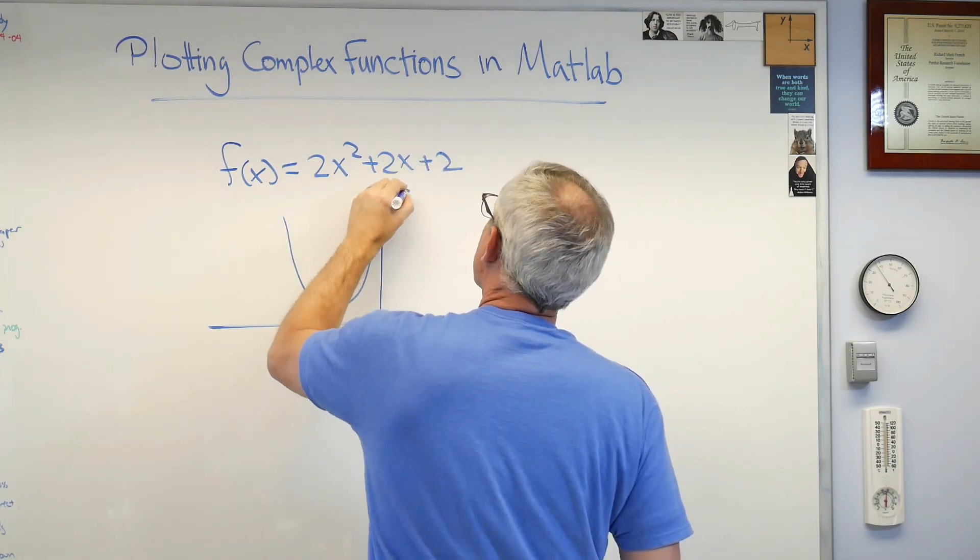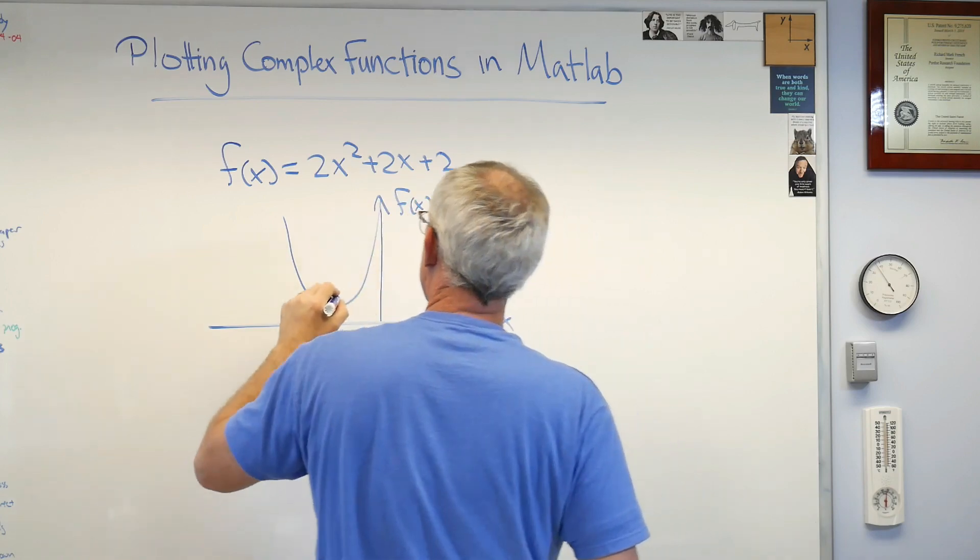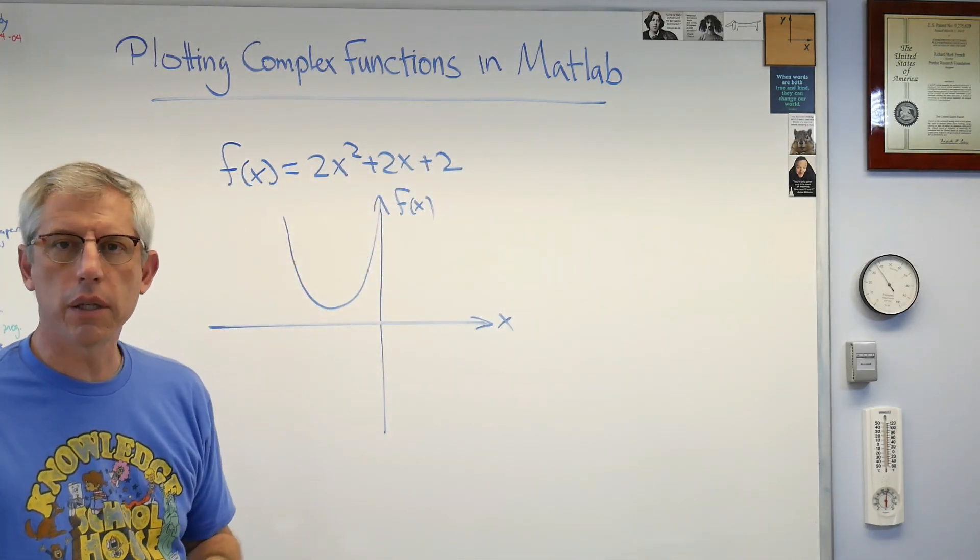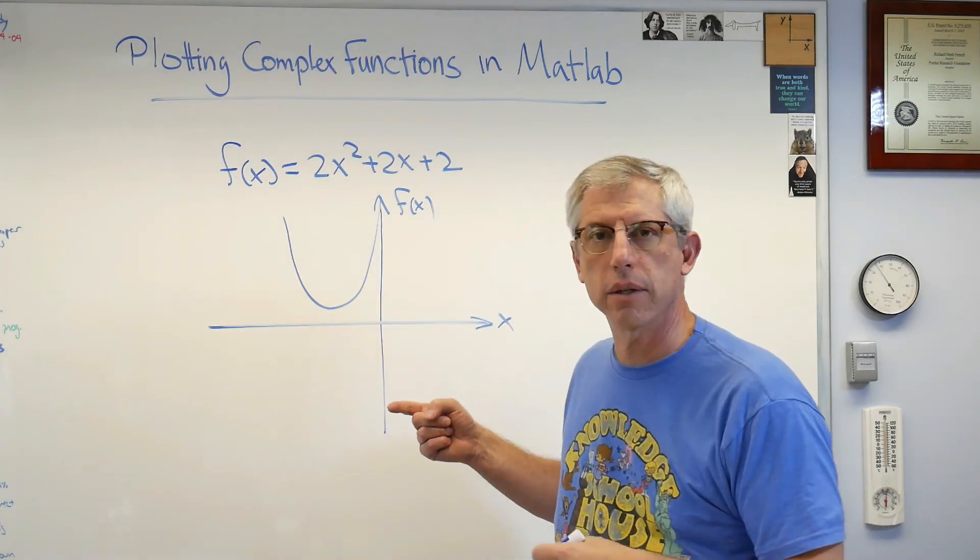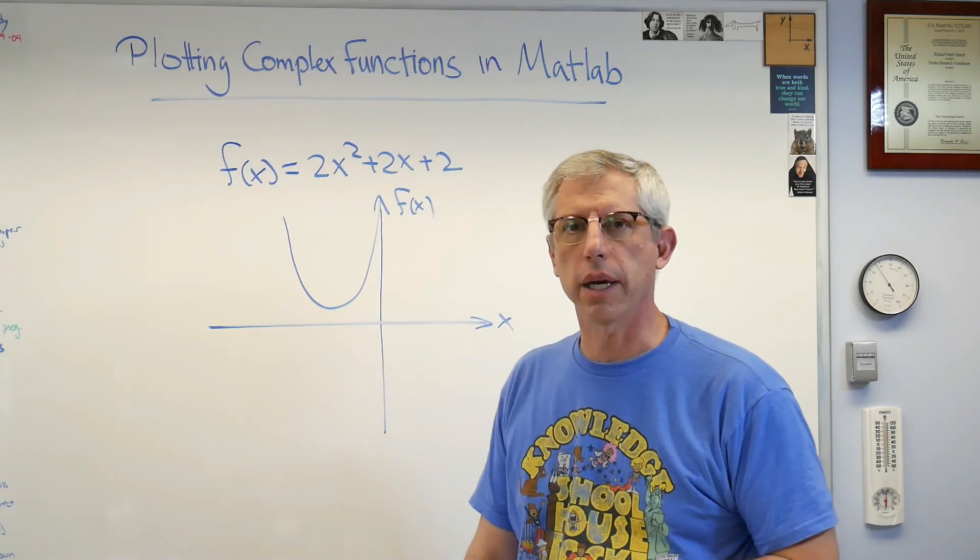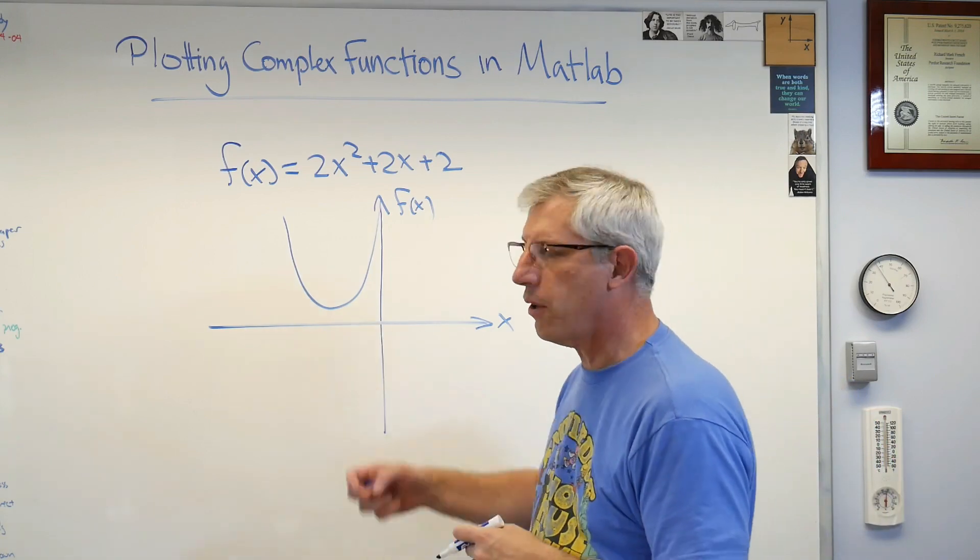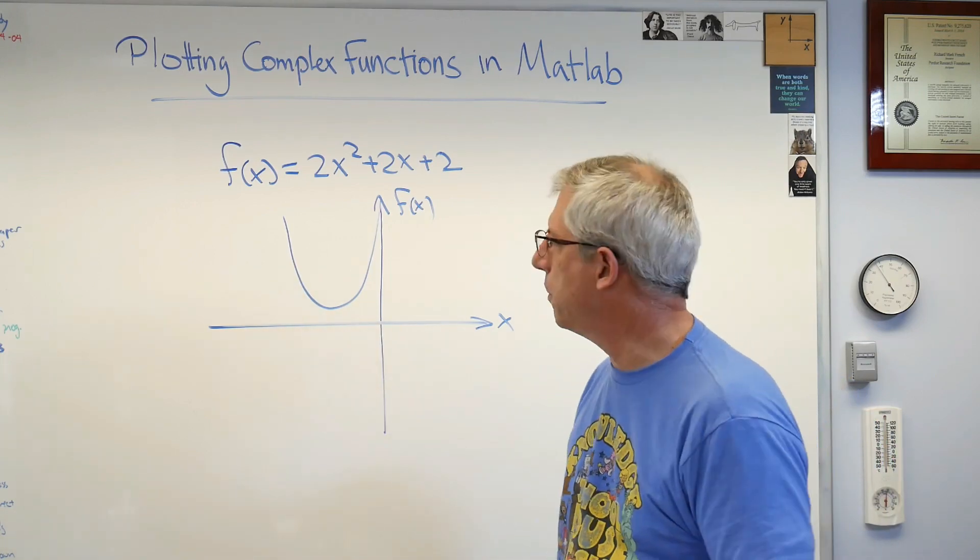When you draw a picture of this, there's x and there's f of x. The root of an equation is where the curve crosses the x-axis. Well, this doesn't cross the x-axis, so its roots are complex.